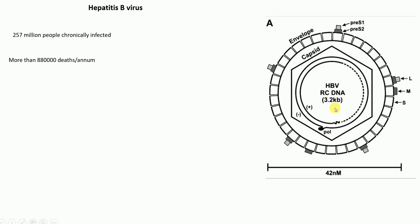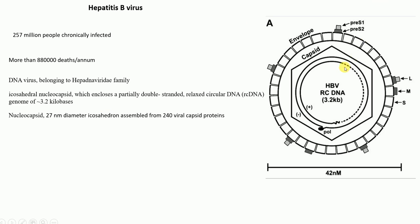The picture here shows the schematic structure of hepatitis B virus, about the details of which I'm going to talk later. The hepatitis B virus structure contains the envelope and also the nucleocapsid. If you look at the envelope of this hepatitis B virus, it has three envelope proteins: large hepatitis B surface antigen represented by L, medium hepatitis B surface antigen represented by M, and small hepatitis B surface antigen represented by S.